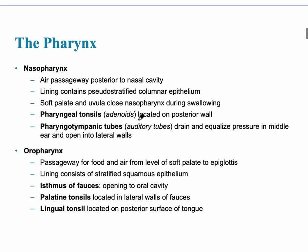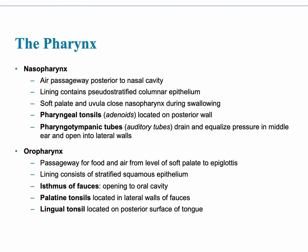The nasopharynx is a little more superiorly located — it is the air passageway posterior to the nasal cavity. Its lining contains pseudostratified columnar epithelium. The pharyngeal tonsils, commonly called the adenoids, are here and could be removed when you're younger if you had your tonsils taken out. The pharyngeal tympanic tubes, more easily called the auditory tubes, drain and equalize pressure in the middle ear and open into the lateral walls. When your ears pop on a plane, that's because of the equalization of pressure between the middle ear and the pharyngeal region. An infection of the sore throat could spread to the auditory tube because of this connection.